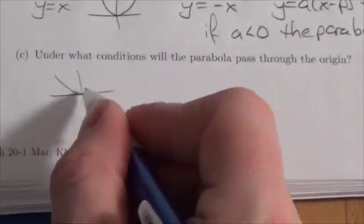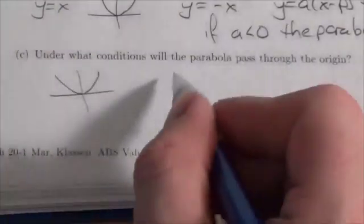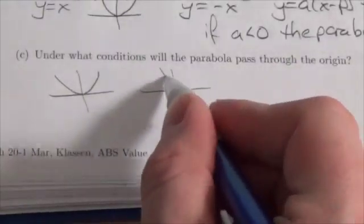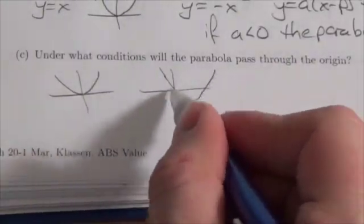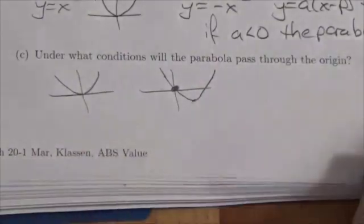So that could be the vertex passing through the origin, but it could also be something like this where the parabola is off to the side here.